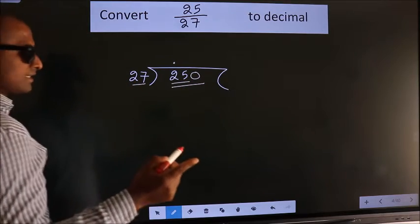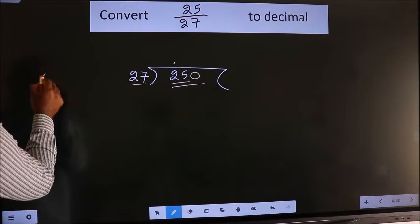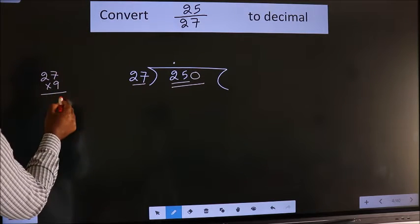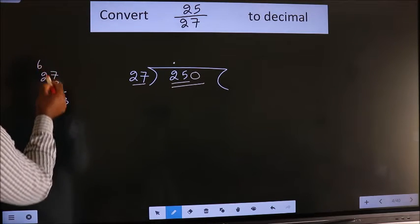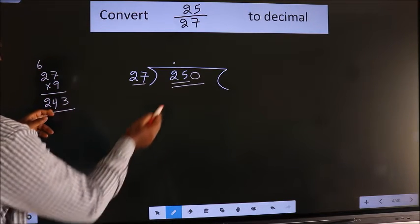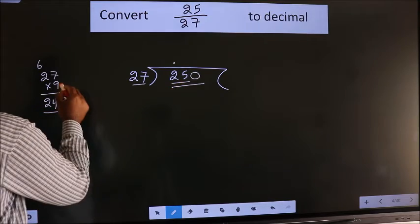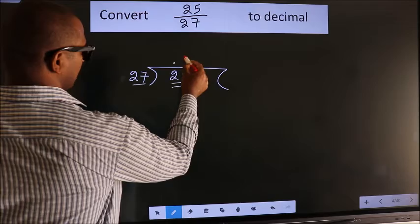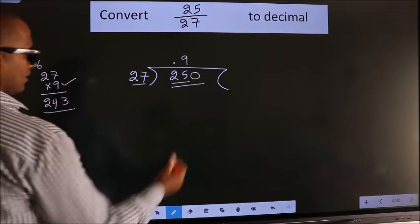Let us check with 9. So 27 times 9: 9 times 7 is 63, 3, 6, 9, 2, 18 plus 6 is 24, so 243, close to 250. So we go with 9. So 9 times is 243.